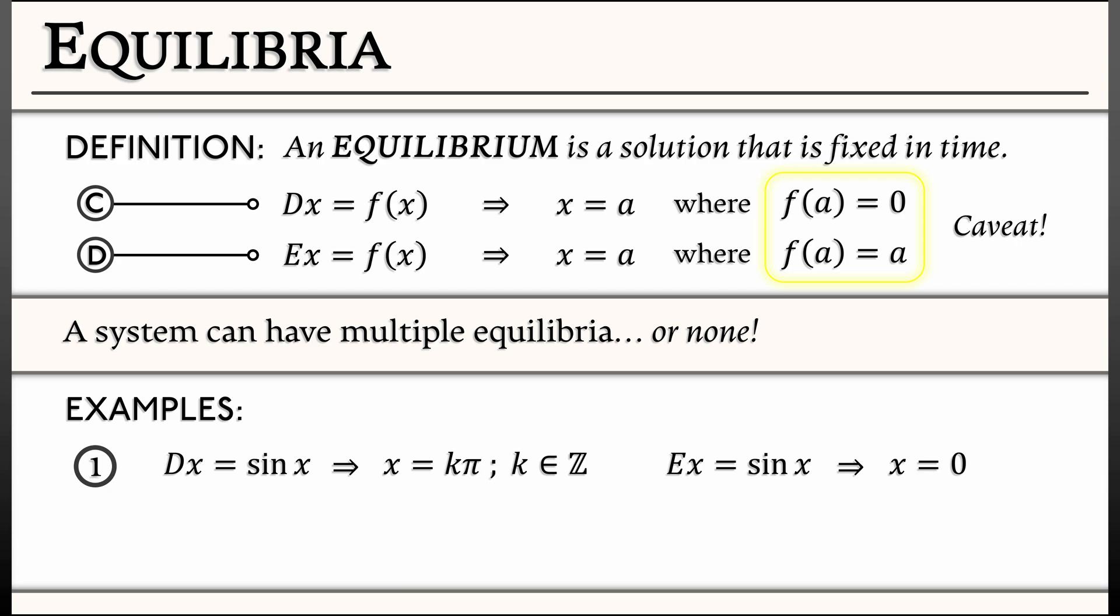Let's consider a different system. Let's look at dx equals 3x minus x squared minus 2. To find the equilibria there, we set the right-hand side equal to zero. I can factor that as x minus 1 times x minus 2. That means we have equilibria at x equals 1 and x equals 2.